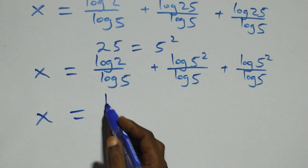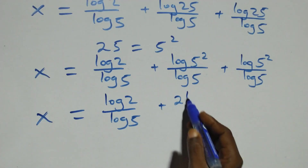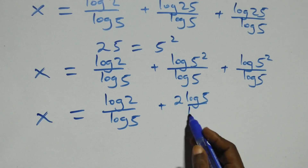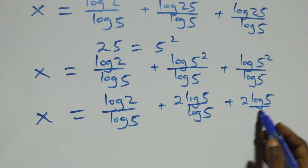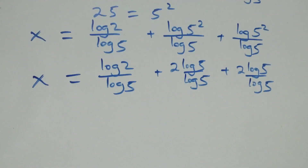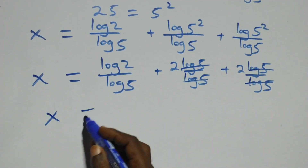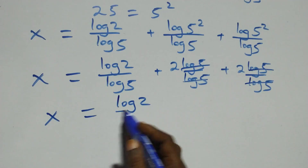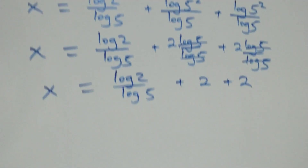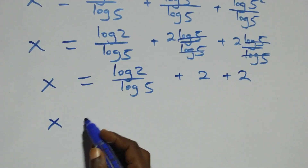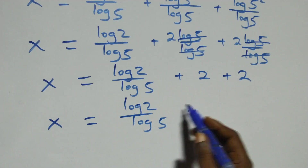Applying the power rule, log 5 squared becomes 2 log 5. So we have x equals to log 2 over log 5 plus 2 log 5 over log 5 plus 2 log 5 over log 5. Log 5 cancels in both terms, giving x equals to log 2 over log 5 plus 2 plus 2, which is x equals to log 2 over log 5 plus 4.